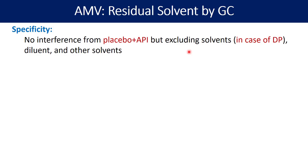However, you must avoid adding the solvent you are going to quantify. For example, if ethanol is the solvent used for paracetamol tablet manufacturing, then you must exclude ethanol from this placebo preparation. In case of a simple API where you are conducting residual solvent validation, the placebo does not come into the picture — only the diluent is required to assess interference at the retention time of your residual solvent. If you have more than one residual solvent to assess, such as methanol and ethanol, you also have to confirm that these two solvents do not interfere at each other's retention time.